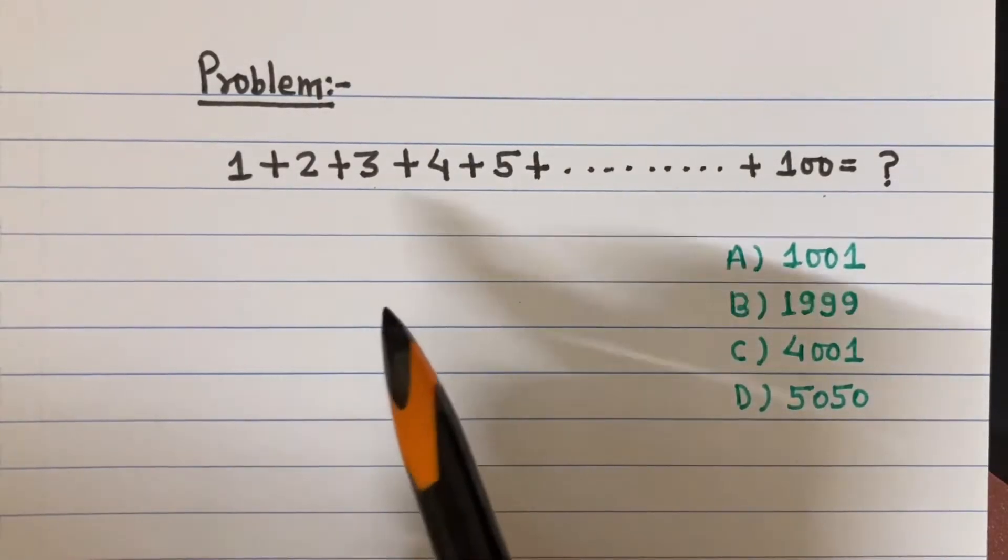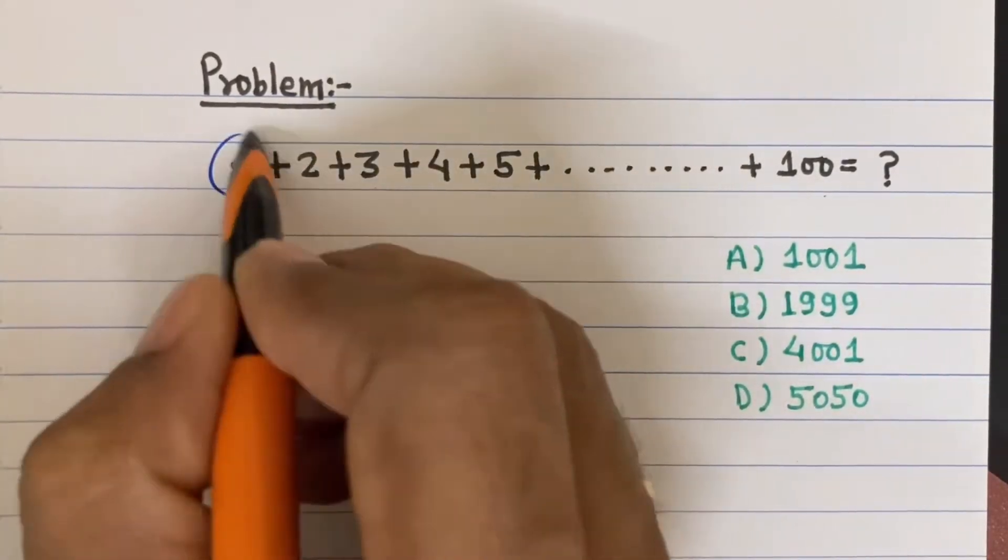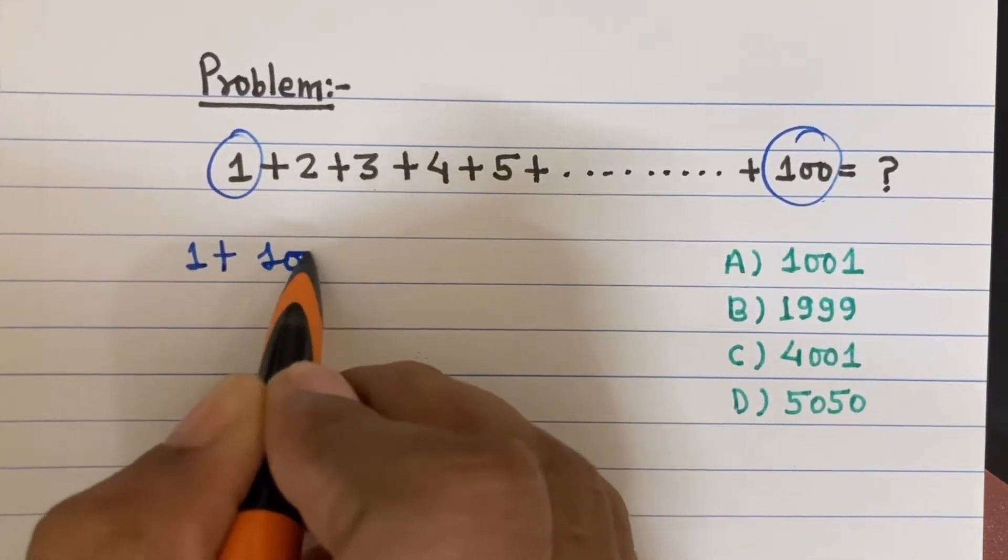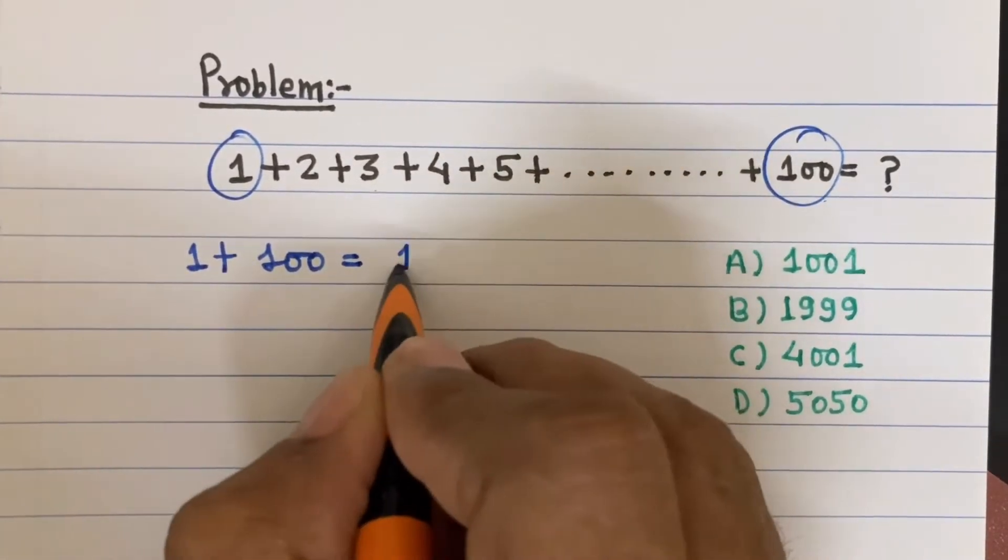To solve this, I'm going to start with the first number and the last number. I'm going to add them: 1 plus 100 equals 101.